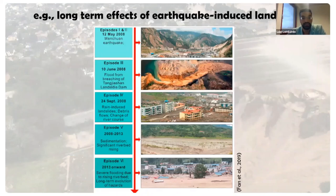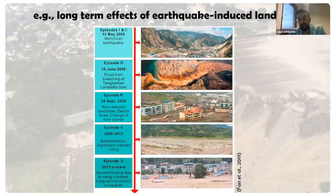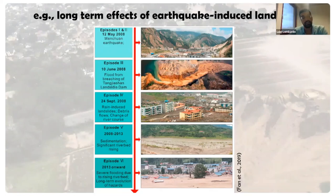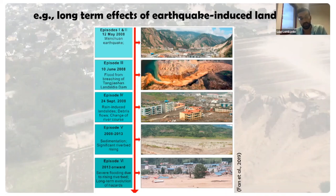The Wenchuan earthquake triggers landslides, and the landslides will damage society, but as a byproduct they will dam rivers. With the first rainfall coming in, the river may breach the dam and flood the landscape. This is an actual chain of events that happened at Wenchuan and is very well documented. We are also trying to model multi-hazard processes and how these may interact with each other.